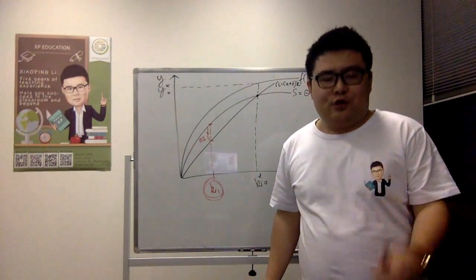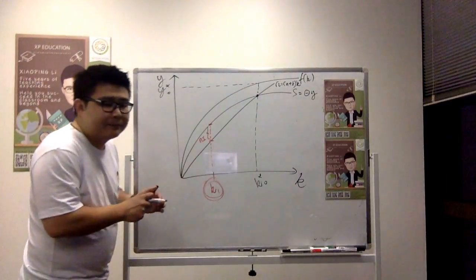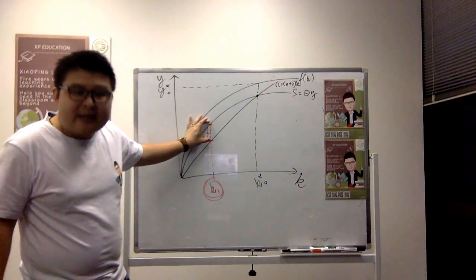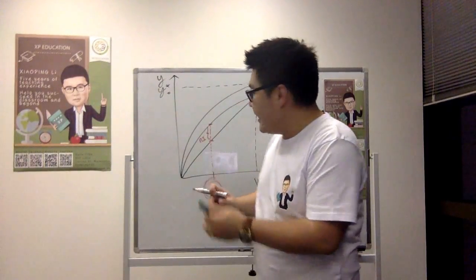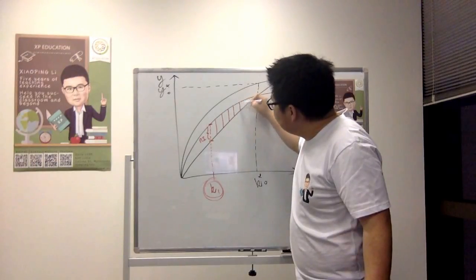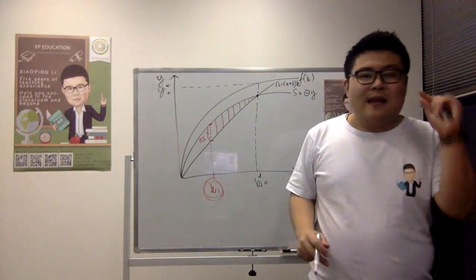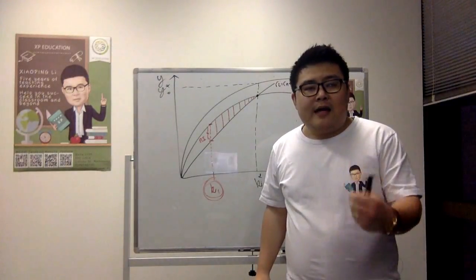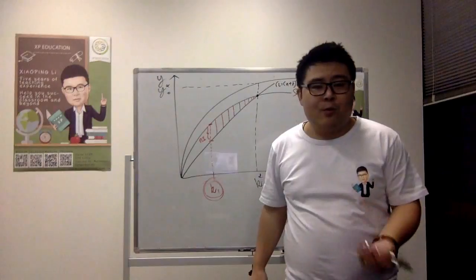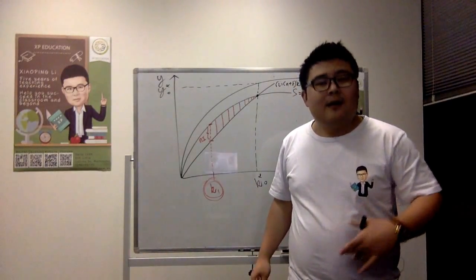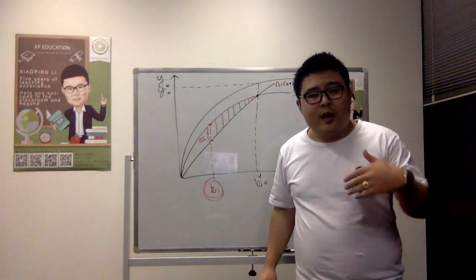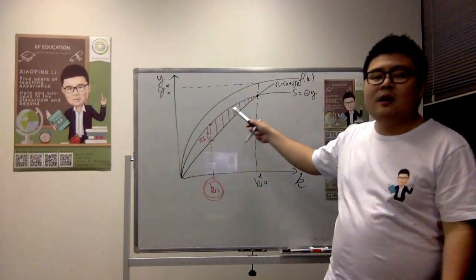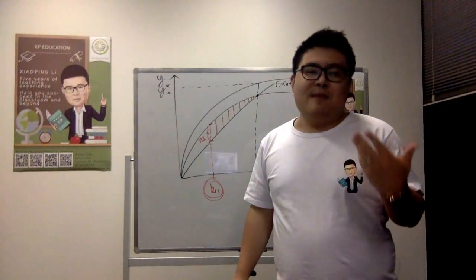The gap between savings and replacement investment is largest when you are furthest from the steady state. As we converge towards the steady state, this gap becomes smaller and smaller until it reaches zero at the steady state. This means that as we converge towards the steady-state level of capital per worker, we are growing at a diminishing rate.